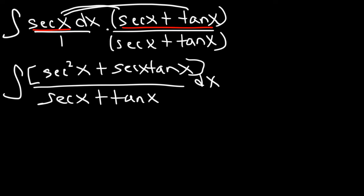So what we're going to do is we're going to make u equal to secant x plus tangent x. And here's why. The derivative of secant is secant tangent, and the derivative of tangent is secant squared.